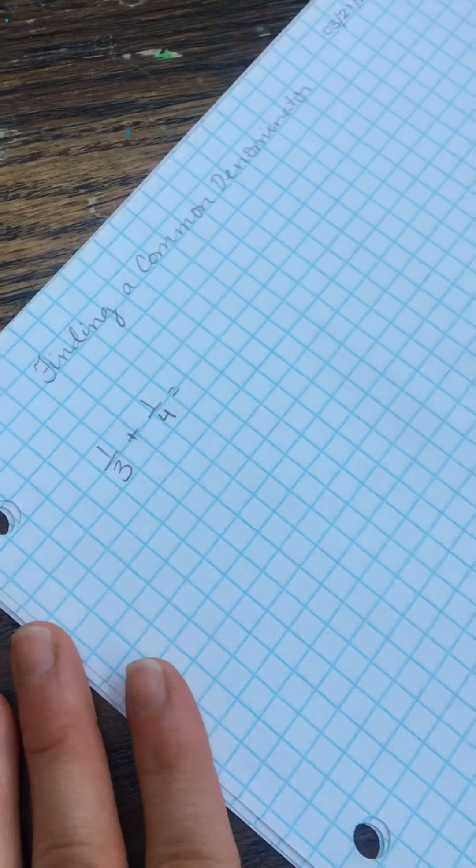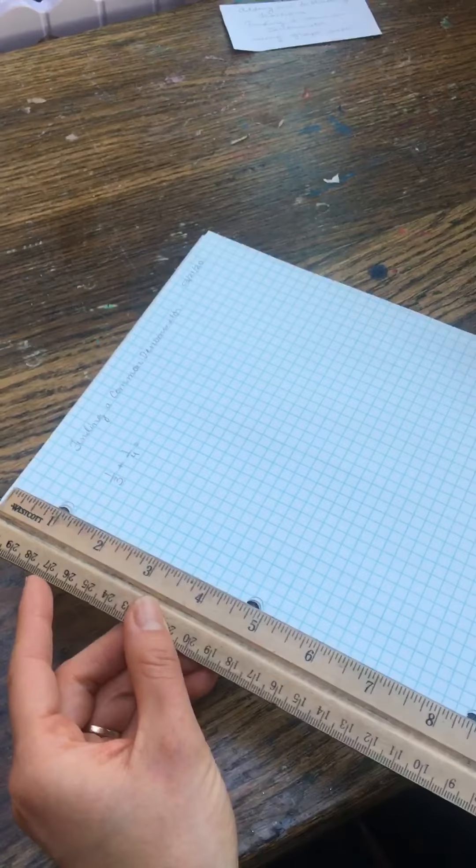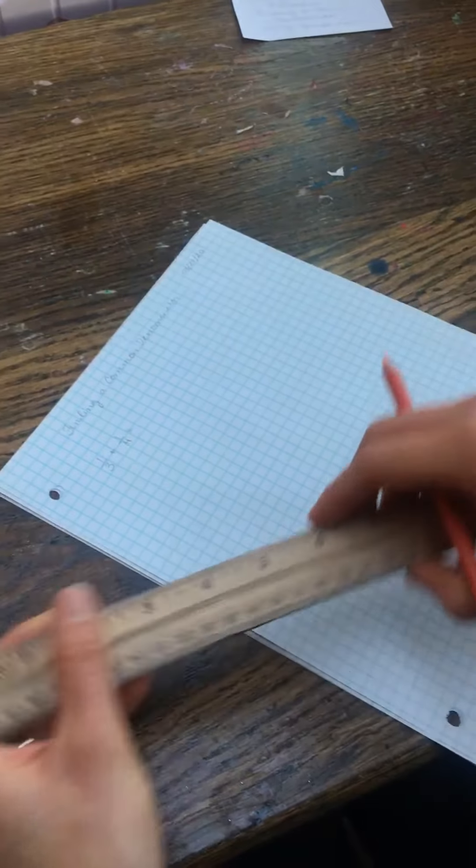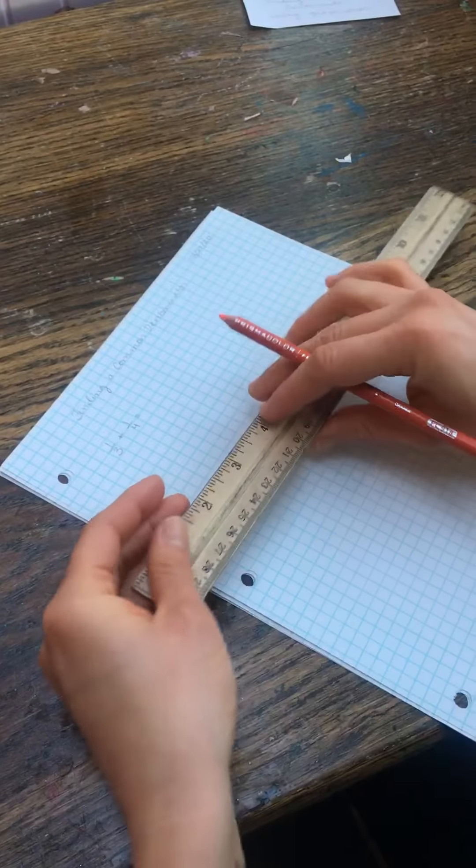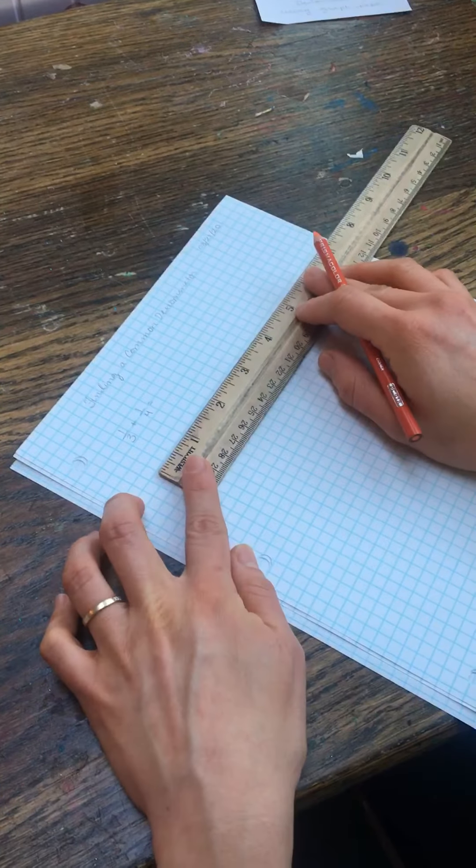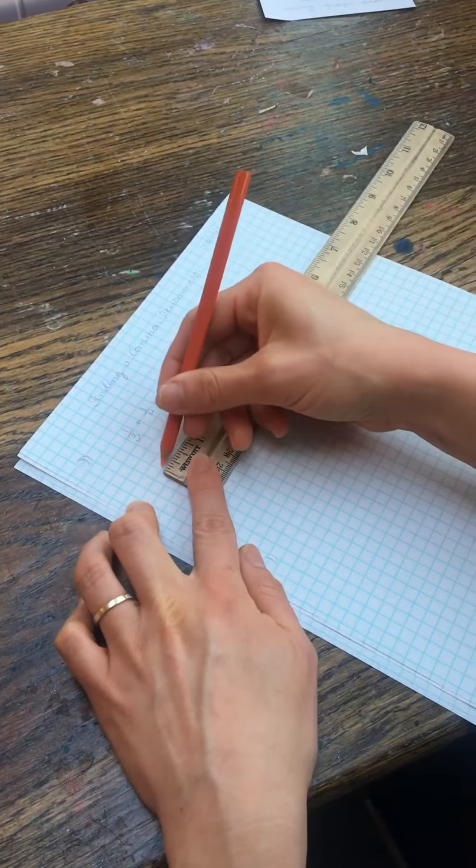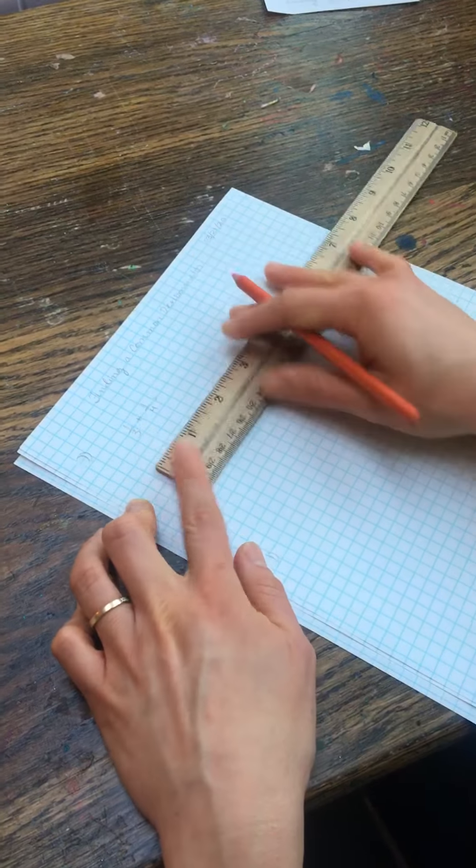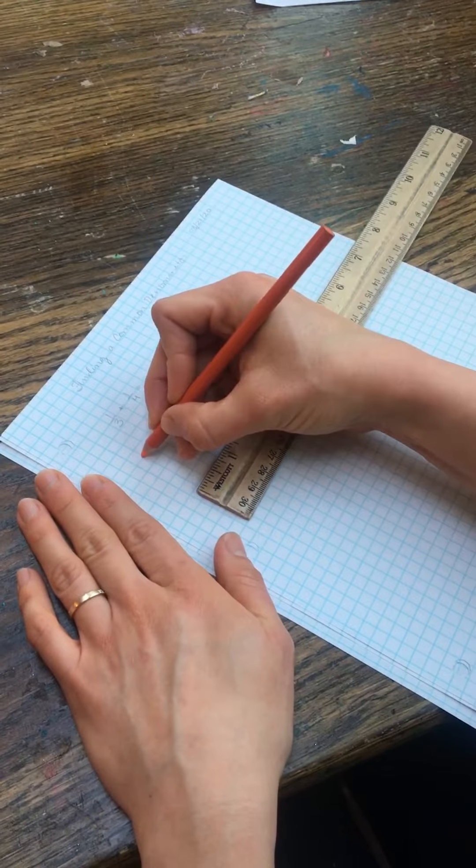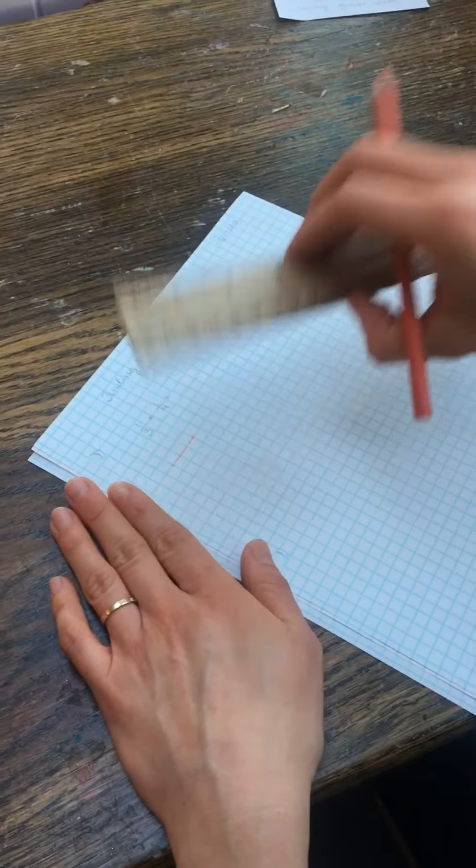Okay, so we need to create a unit on our graph paper. So I'm going to take one of my colored pencils and I'm going to count three squares on the graph paper. I like to put dots at the end so that it's super clear.